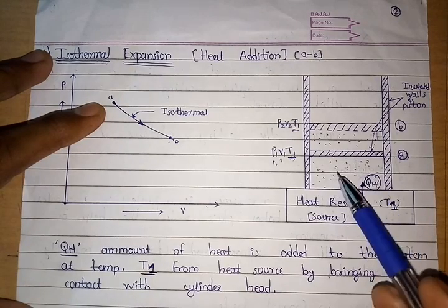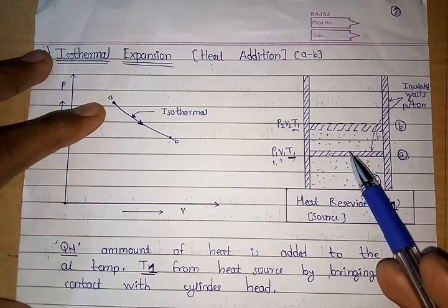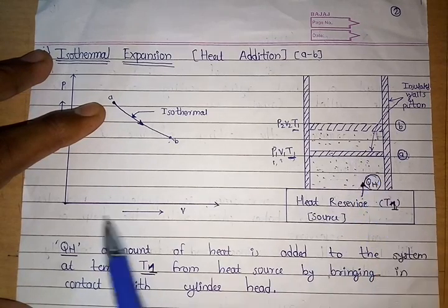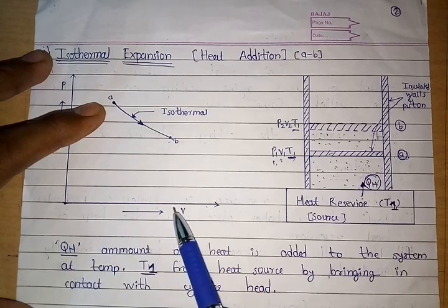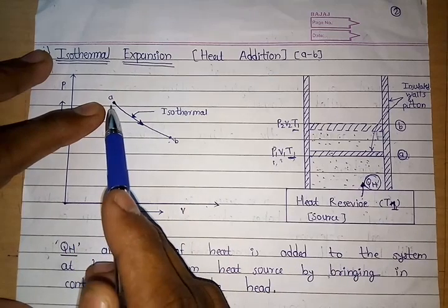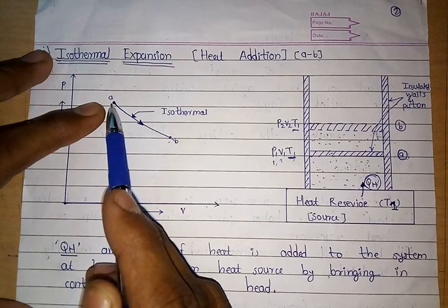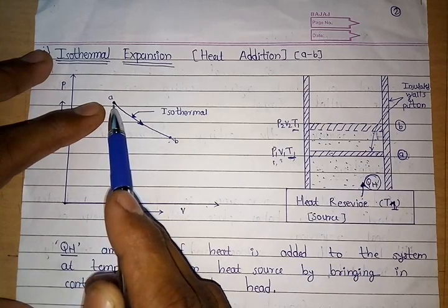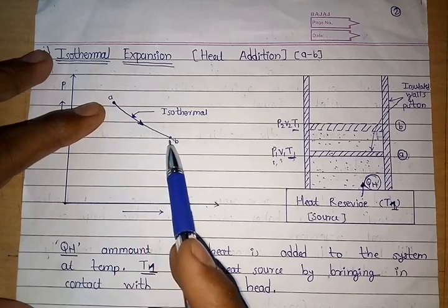As volume increases, pressure decreases, so this process can be represented by the curve A to B on the PV diagram.